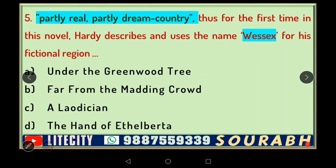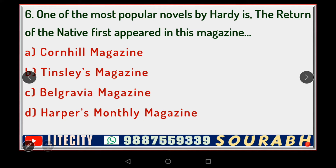The next question: 'Partly real, partly dream country' — for the first time in this novel, Hardy describes and uses the name Wessex for his fictional region. Just like we find Malgudi in R.K. Narayan, Hardy used this device of creating an entirely fictional country. Wessex was partly real, based on Hardy's own observation of his locality, and partly dream country. The answer is 'Far from the Madding Crowd,' where he first uses this term.